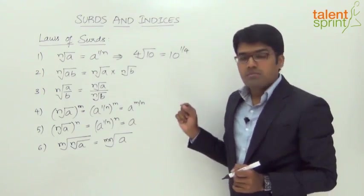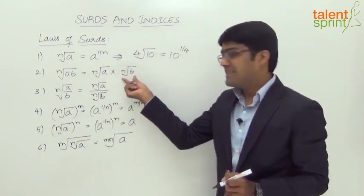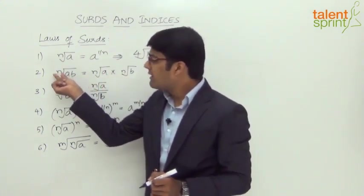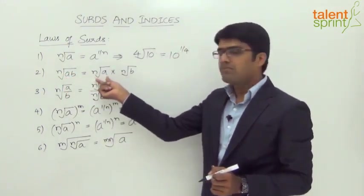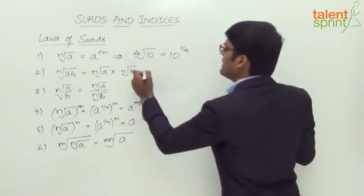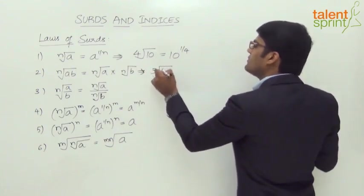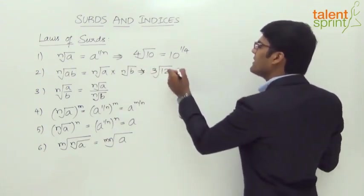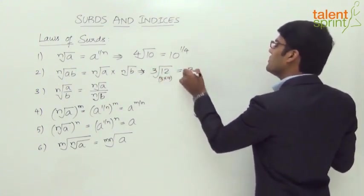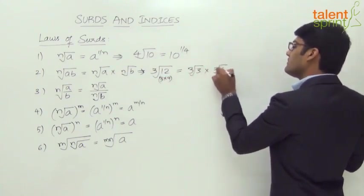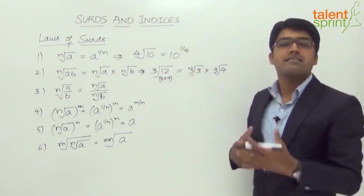Rule number two says: the n-th root of a times b can be expressed as the n-th root of a multiplied by the n-th root of b. So when we have a common radical power for a product a times b, it can be split into separate radicals. For example, the cube root of 12 — since 12 is 3 times 4 — can be expressed as the cube root of 3 times the cube root of 4.